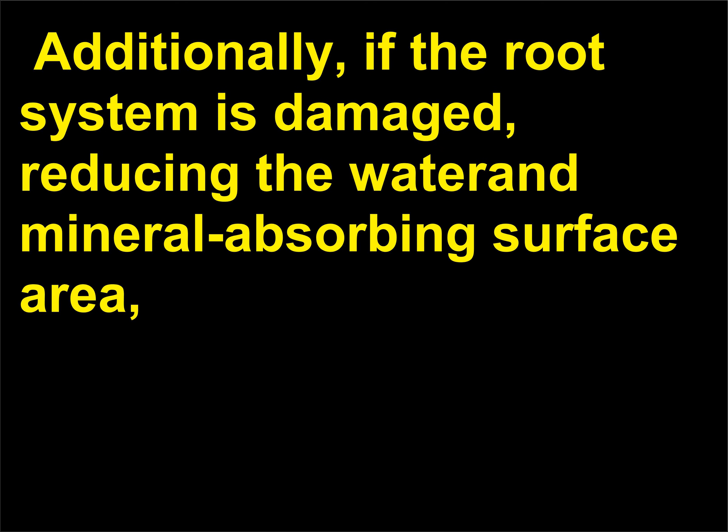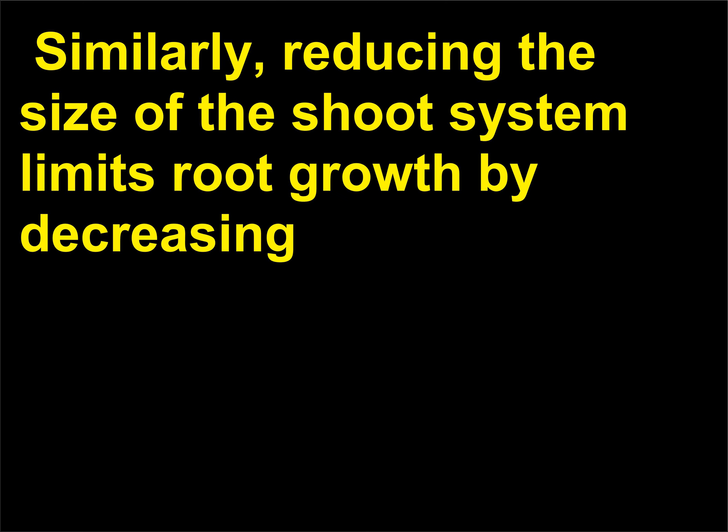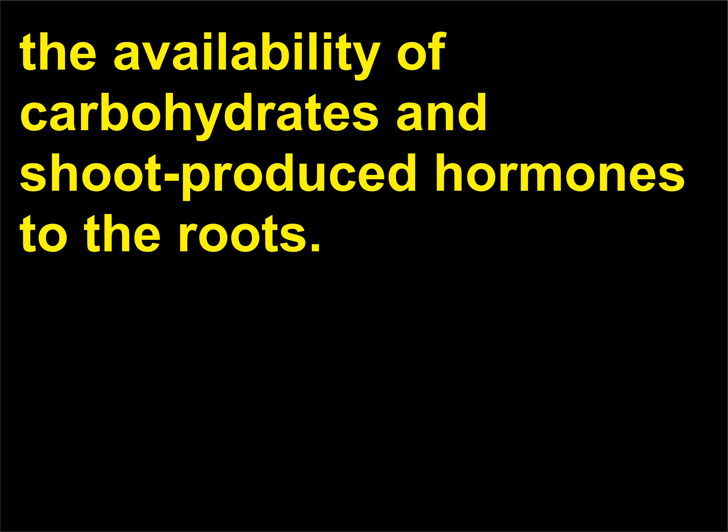Additionally, if the root system is damaged, reducing the water and mineral absorbing surface area, shoot growth is reduced by lack of water, minerals, and root-produced hormones. Similarly, reducing the size of the shoot system limits root growth by decreasing the availability of carbohydrates and shoot-produced hormones to the roots.